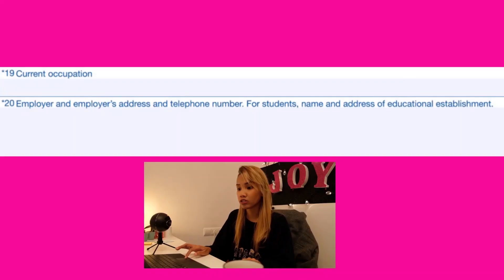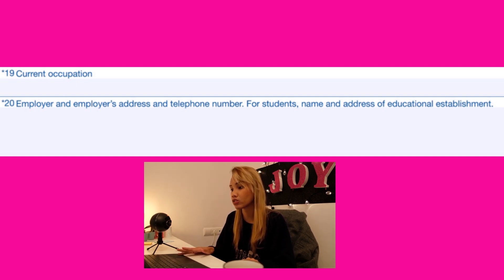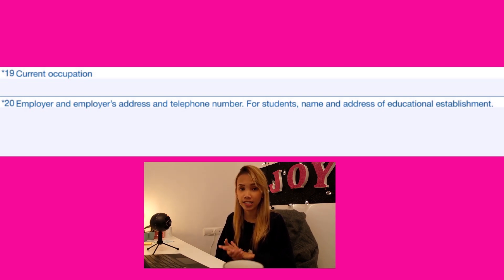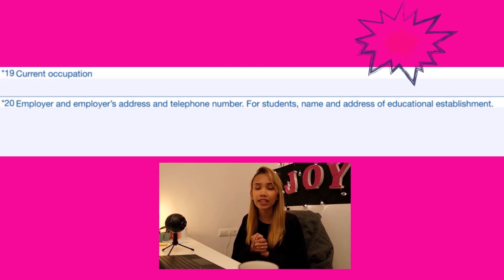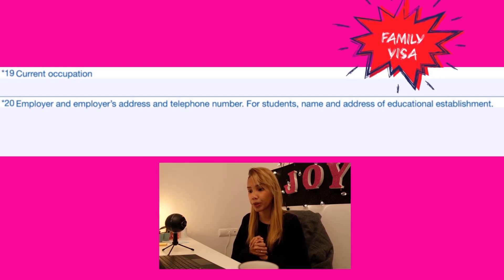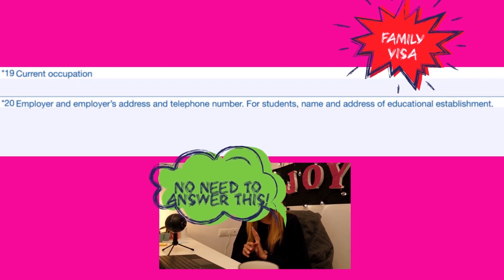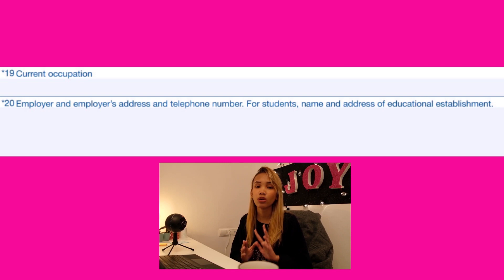For numbers nineteen and twenty, this is information about your current occupation — your employer's name, address, telephone number, and complete information. However, if you are a family member of an EU resident applying for a family visa, there is no need to fill up numbers nineteen and twenty. You can leave them blank as long as you are applying for a family visa.